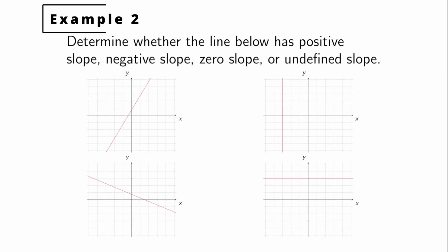Example two: determine whether the line has positive slope, negative slope, zero slope, or undefined slope. Positive slope means — always imagine your line traveling to the right, in the positive x direction. As we go to the right, if the y coordinate is going up, we have a positive change in y and a positive change in x. Positive divided by positive is positive, so the slope is positive.